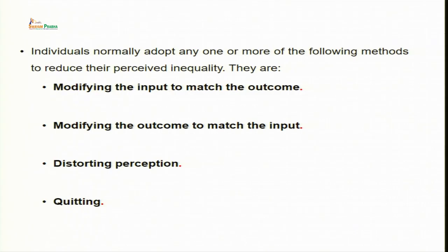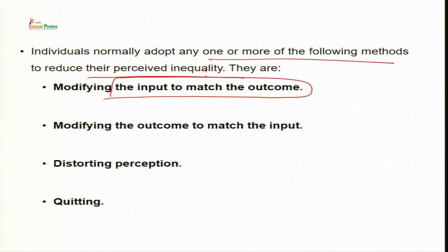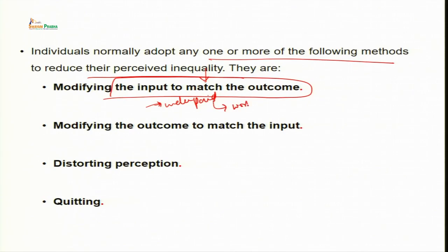Individuals normally adopt one or more methods to reduce perceived inequality. First, they may modify the input to match the outcome. For instance, an underpaid employee who feels his effort is not acknowledged may decide to work less — less pay, so less effort. Second is modifying the outcome to match the input — a less paid person may demand more pay for the job that he is doing, trying to match the demand as outcome with the input he is putting in.